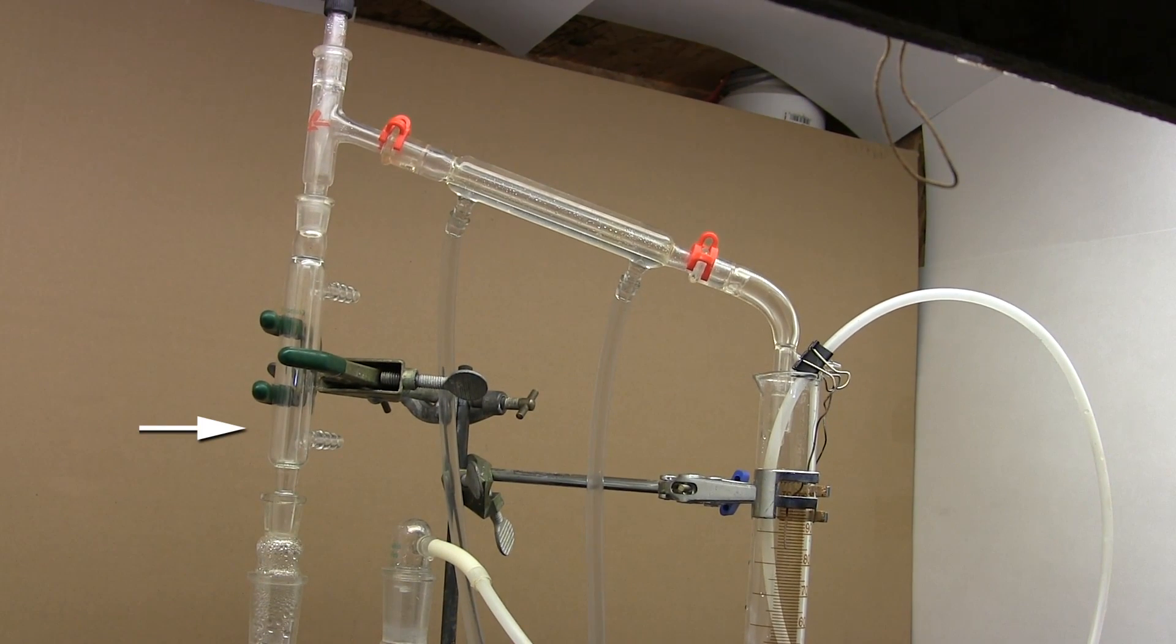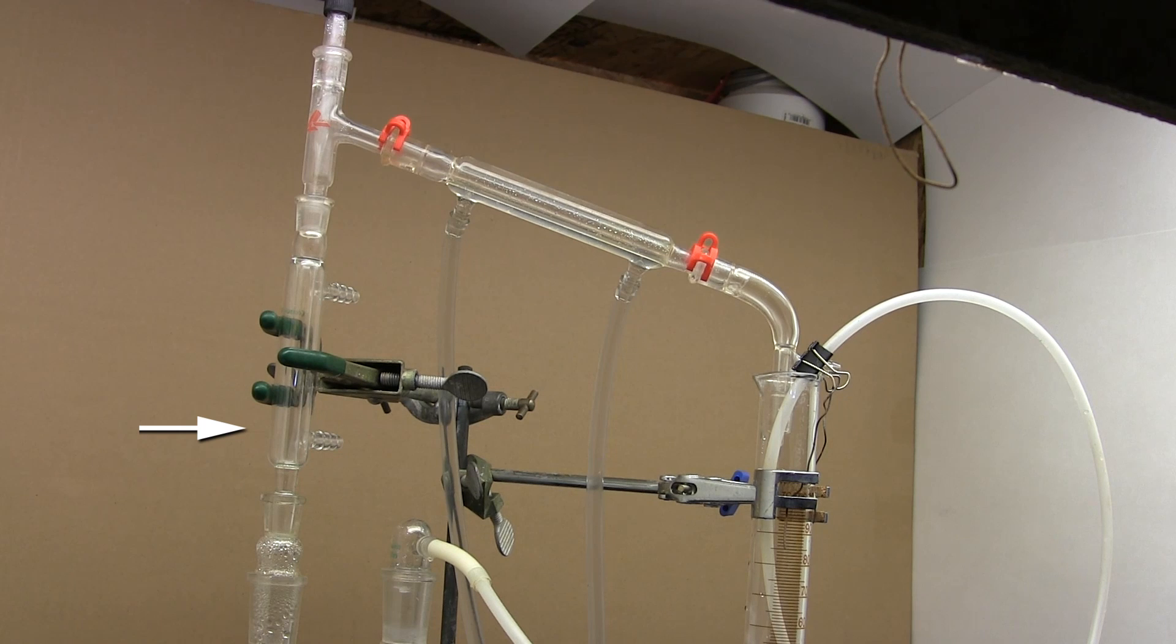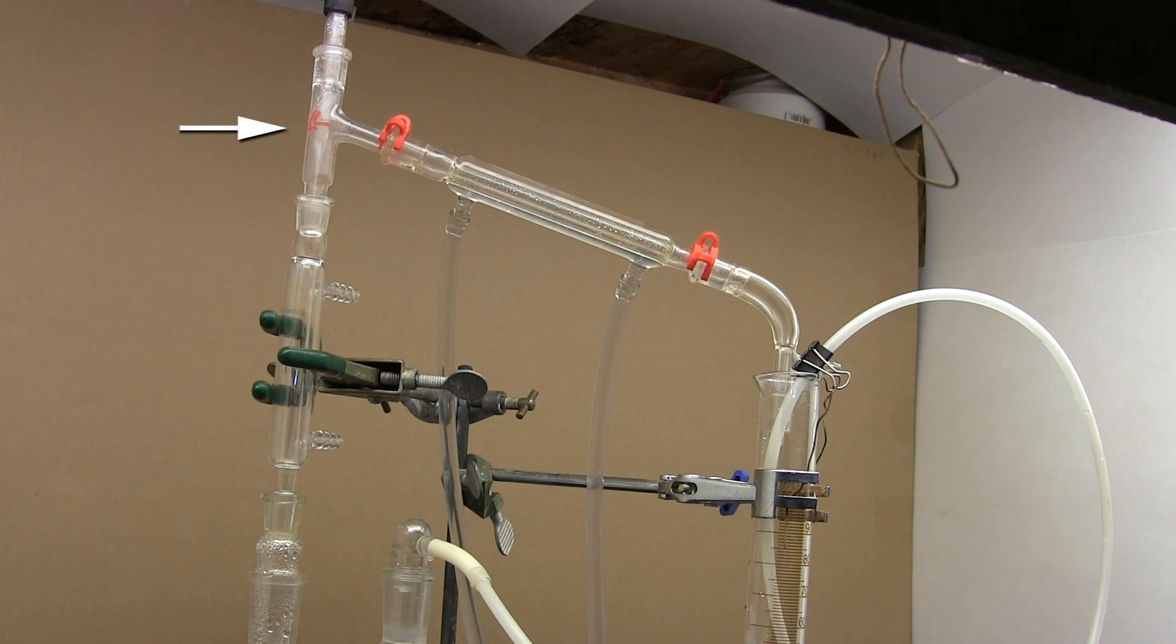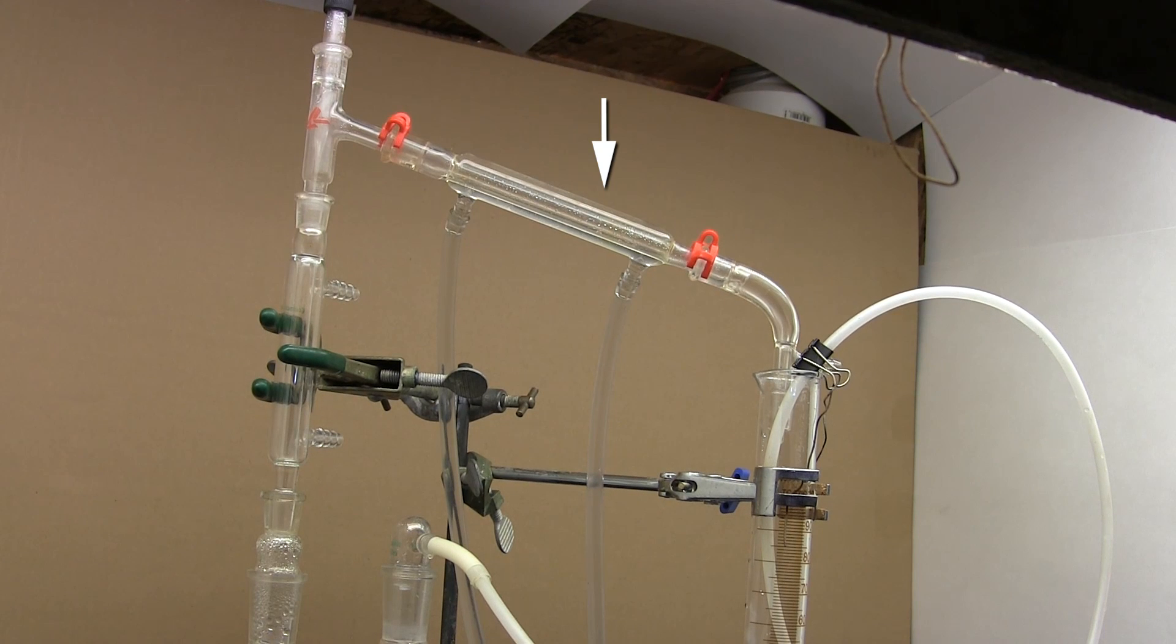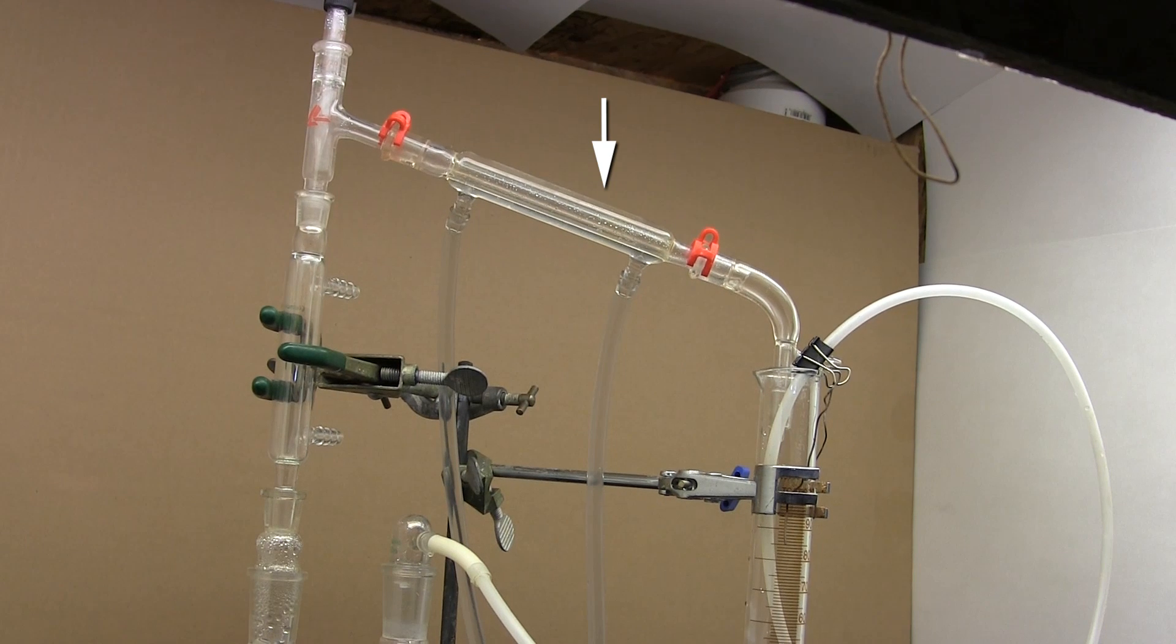Now to the Claisen adapter we have a condenser column. This is not actually being used as a condenser as you can see it's unconnected and you can use just about any column. What we want here is to increase the height of the still head up here. So you can use whatever column you want to achieve that. Now to the still head we have a properly connected condenser column that will actually be used as a condenser.